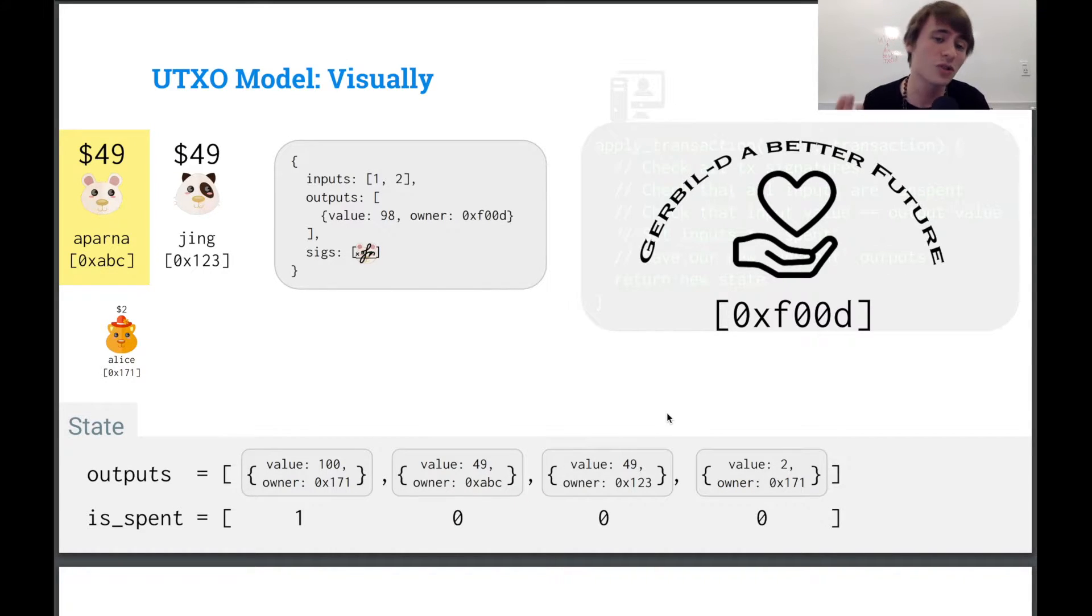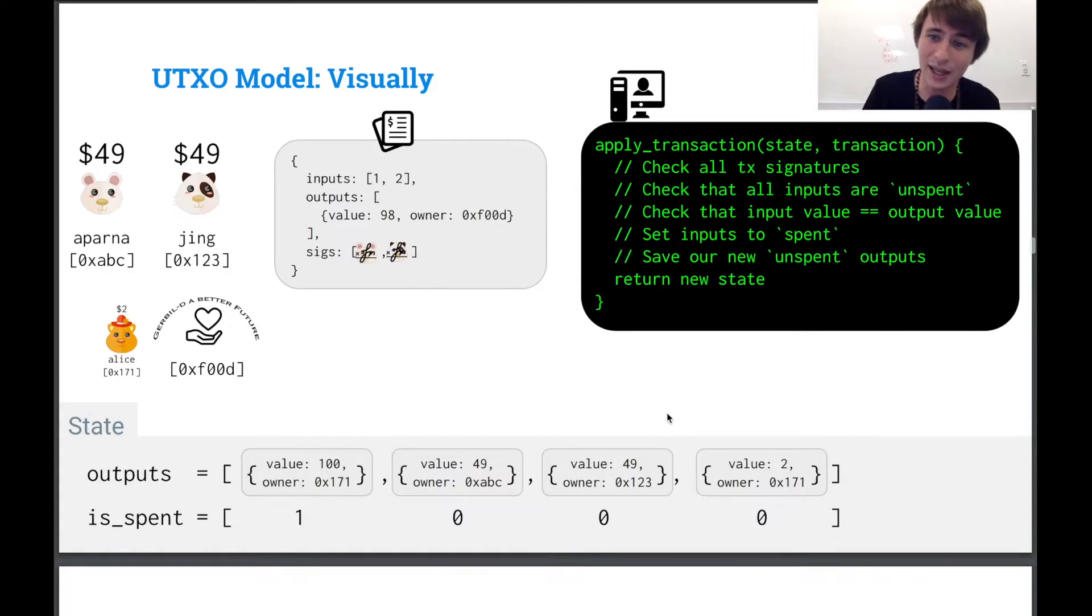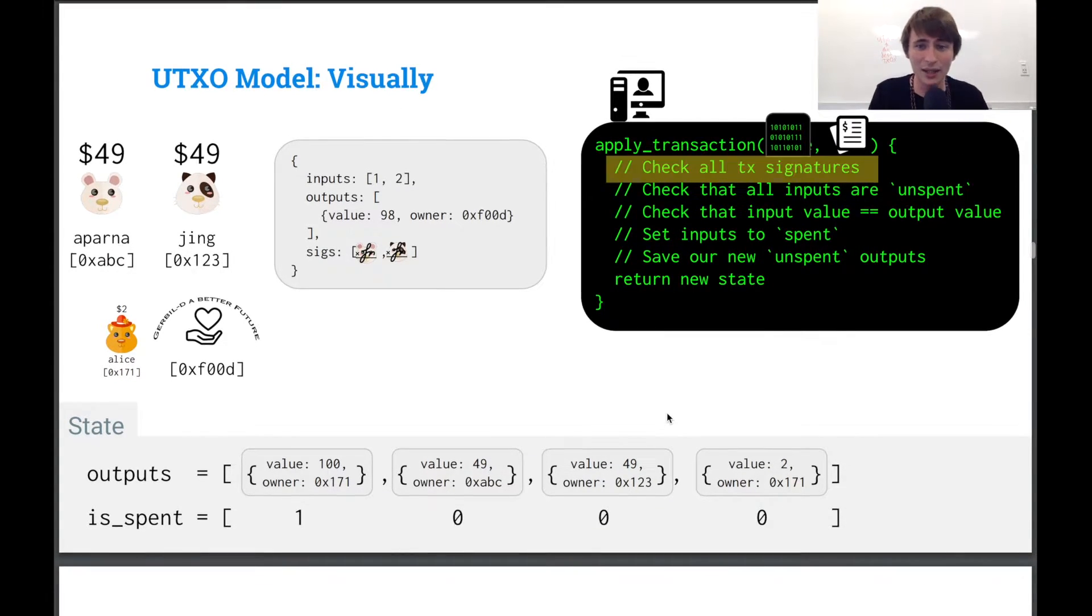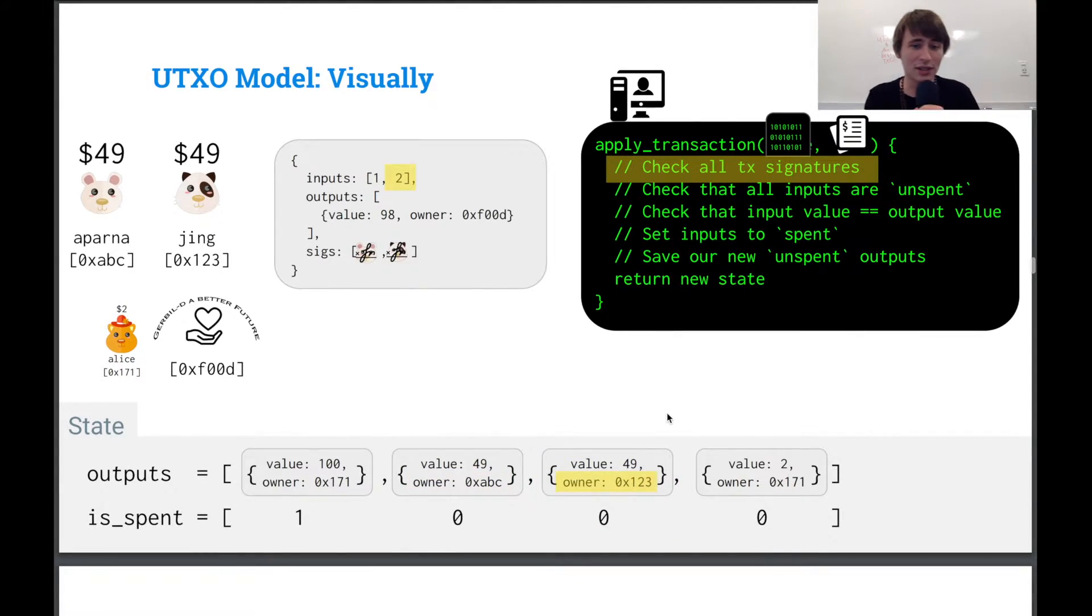Well, Aparna signs this transaction, but for the transaction to be valid, all the signatures have to be there. Jing also signs the transaction and then we just apply it and apply our state and we go through the same process. We check all the transaction signatures, each one of them, right? The first one corresponds to Aparna's signature. The second one corresponding to Jing's signature.